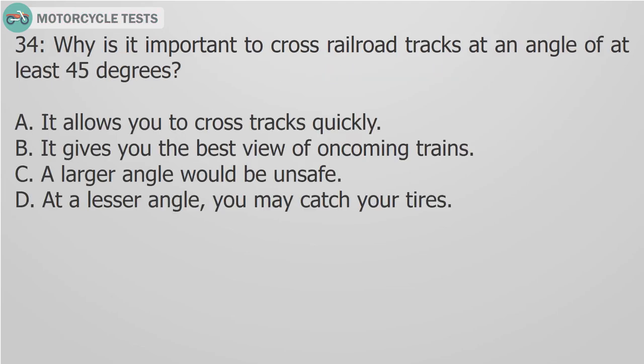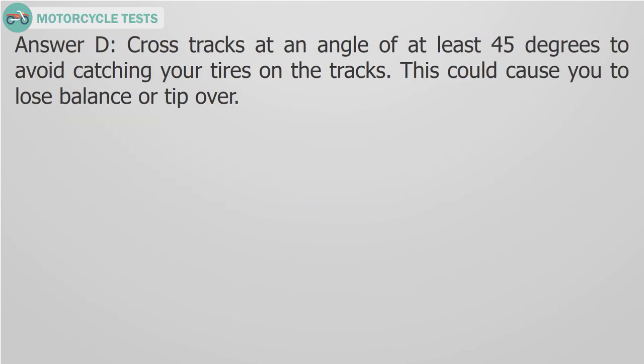Question 34. Why is it important to cross railroad tracks at an angle of at least 45 degrees? A. It allows you to cross tracks quickly. B. It gives you the best view of oncoming trains. C. A larger angle would be unsafe. D. At a lesser angle, you may catch your tires. Answer D. Cross tracks at an angle of at least 45 degrees to avoid catching your tires on the tracks. This could cause you to lose balance or tip over.